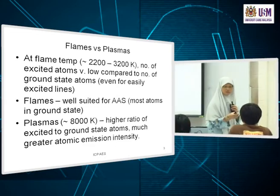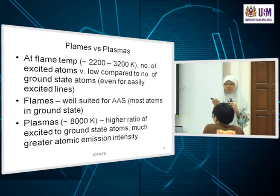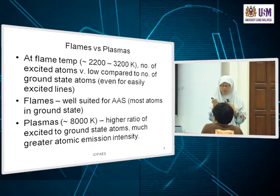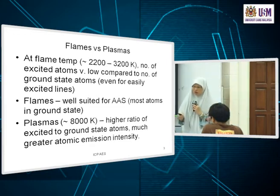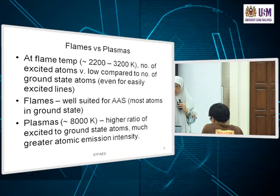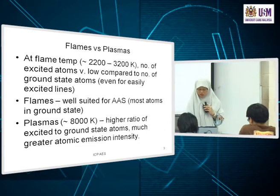Did you calculate the ratio for that particular problem? The assignment used 3,000 K, but at 8,000 K you would expect the ratio of excited atoms — for sodium and magnesium ion — to be a lot more.